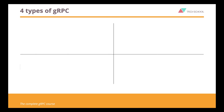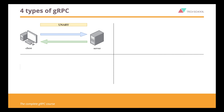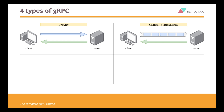There are 4 types of gRPC. The simplest one is unary, where the client sends one single request message and the server replies with one single response. This looks somewhat similar to the normal HTTP API. Then we have client streaming, where the client will send a stream of multiple messages and it expects the server to send back only one single response.